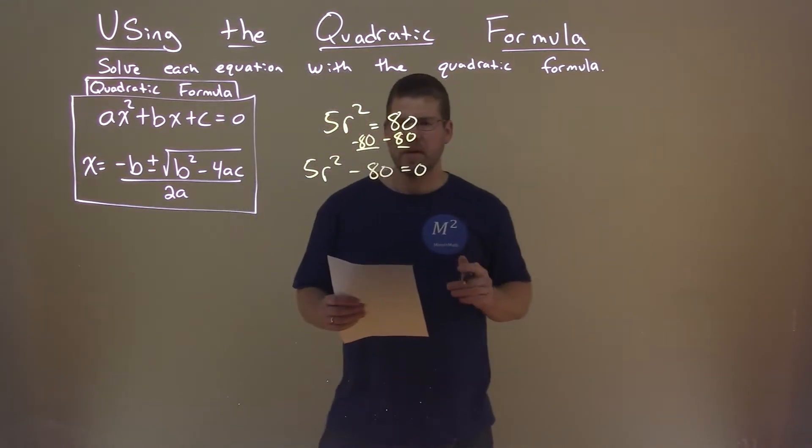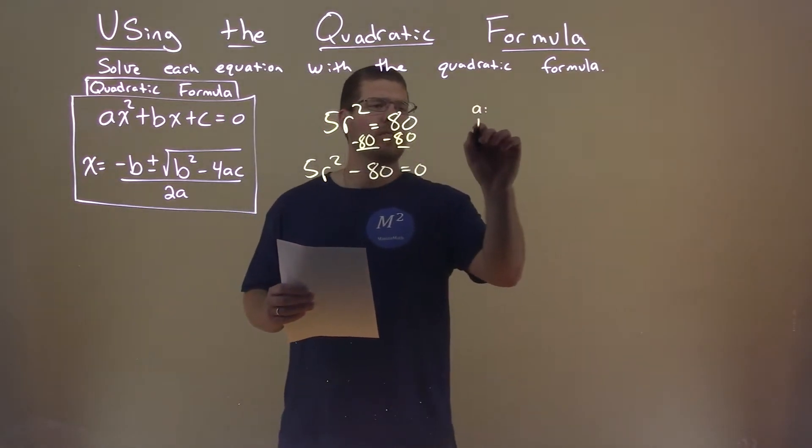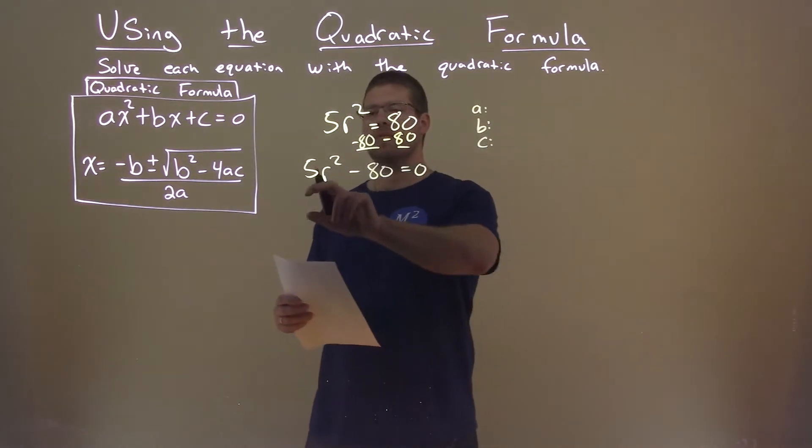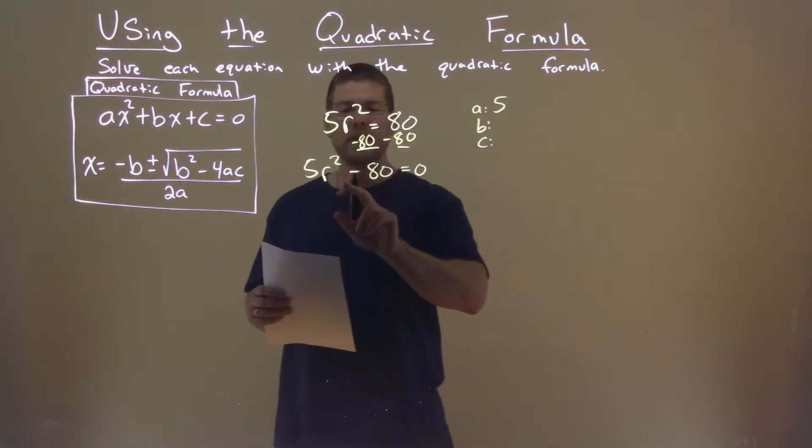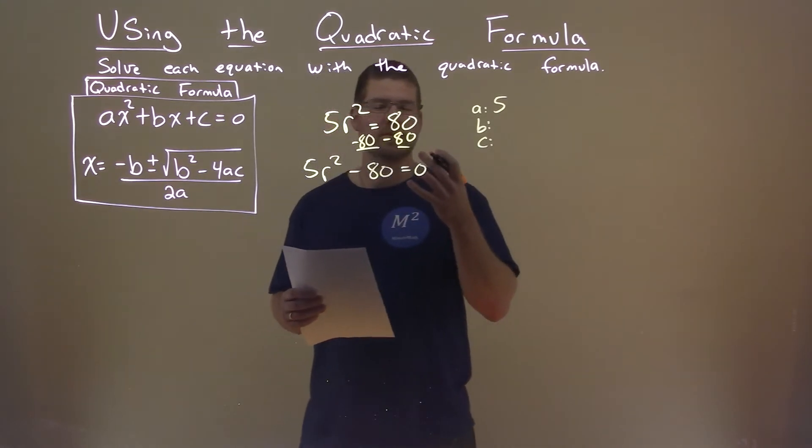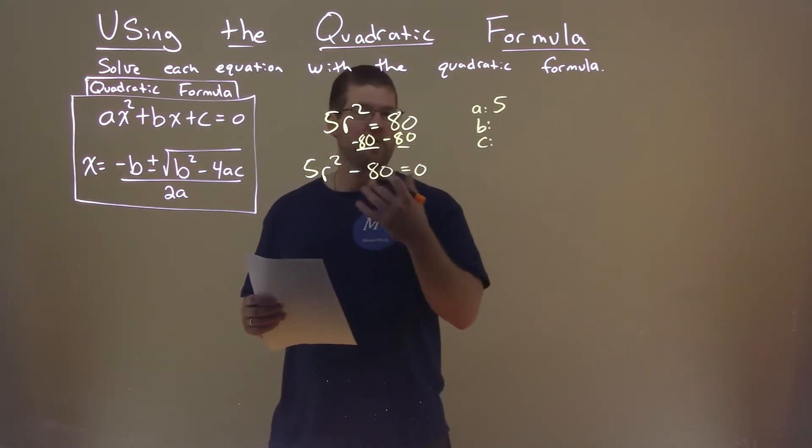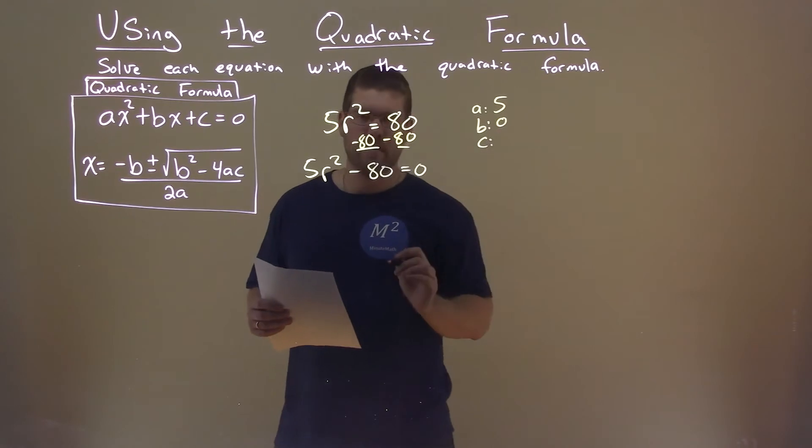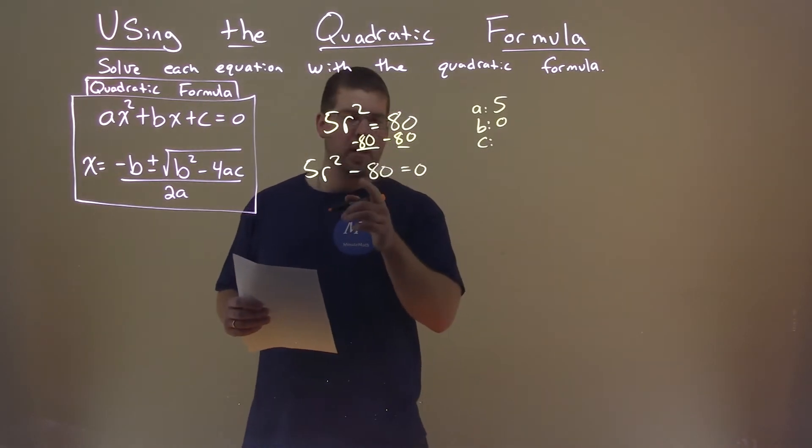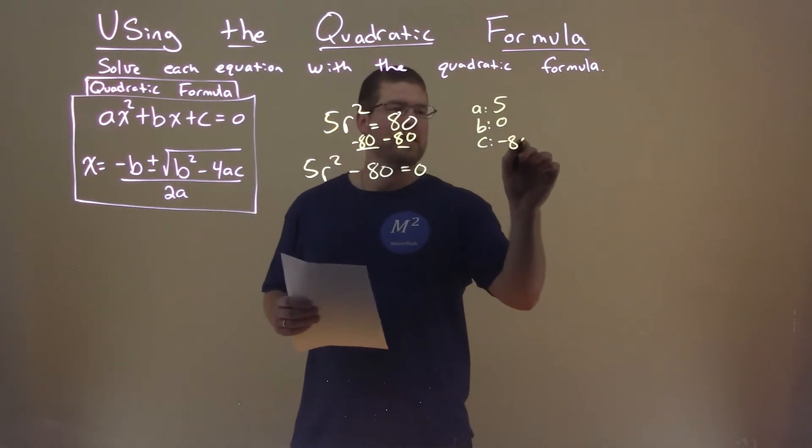All right, so now let's find our a value, our b value, and our c value. a value is 5. b value, well, we don't have just a variable r here, so our b value is 0. Be careful with that, though. c value is negative 80.